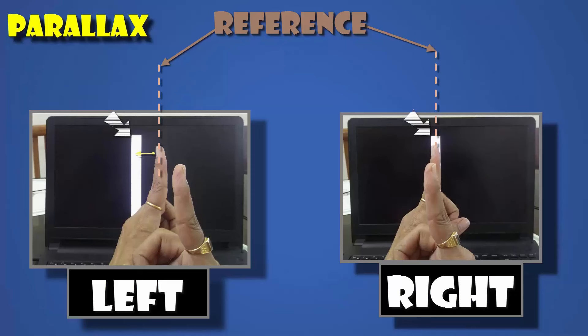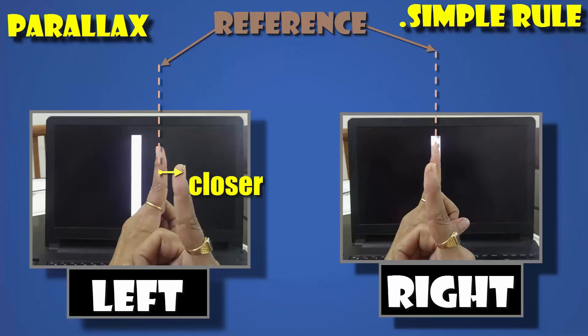So anyways, you want to think about it. The simple rule that your brain is following is, for your left eye, more the right shift, closer the image, more the left shift, farther the image.